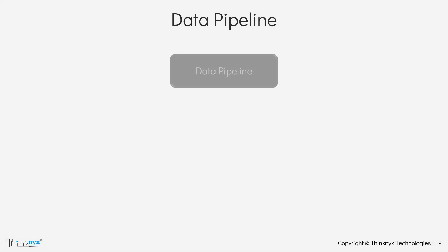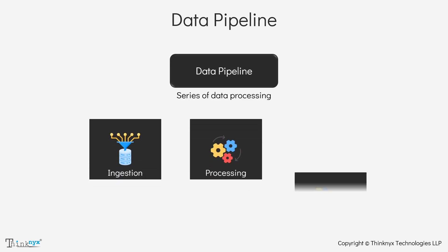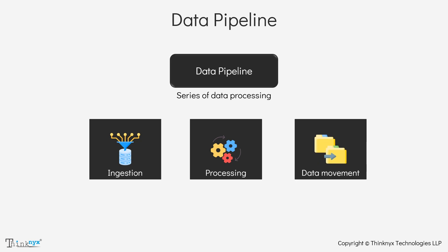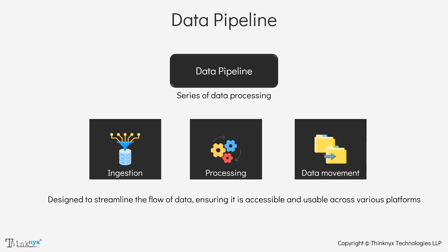The Data Pipeline is a series of data processing steps that involves the ingestion, processing, and movement of data from one system to another. It is designed to streamline the flow of data, ensuring it is accessible and usable across various platforms.